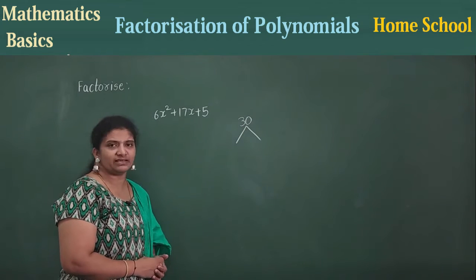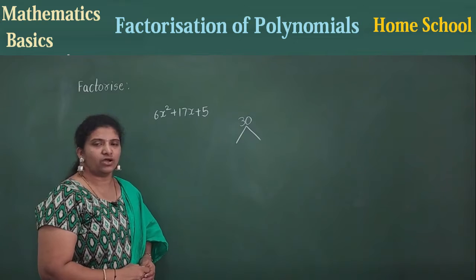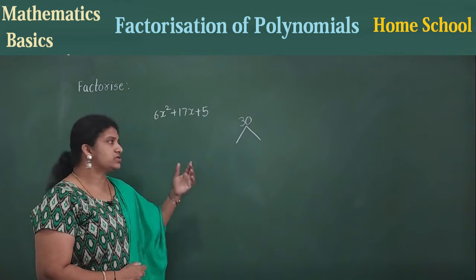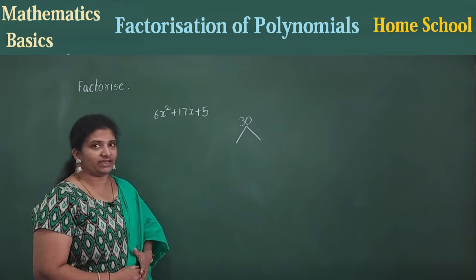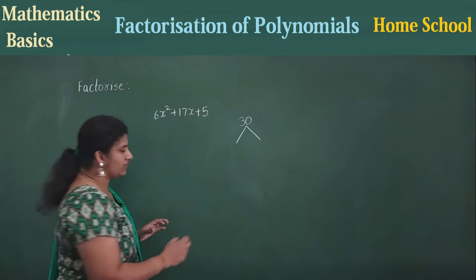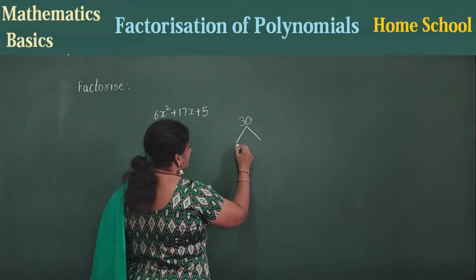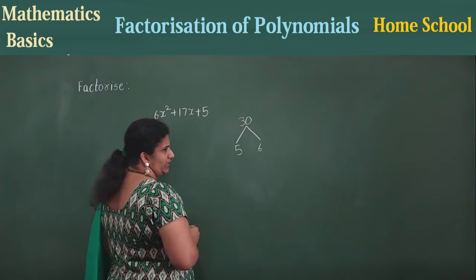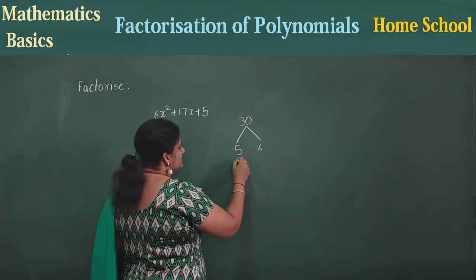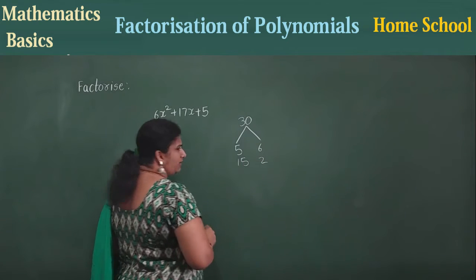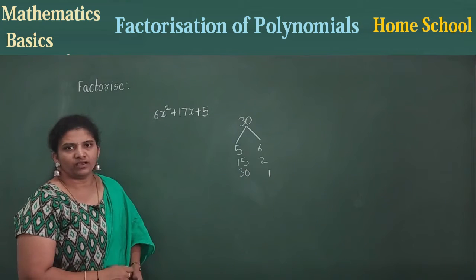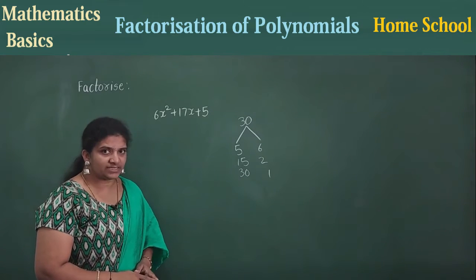Why did I draw two lines like this? You need to find the factors. What are all the factors for 30? You know how to find factors. In the 5 table I can see 30, in the 6 table I can see 30, 15 table or 30 table. Now write the pair of factors: 5 and 6 are 30, 15 and 2 are 30, 30 and 1 are 30.